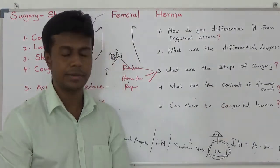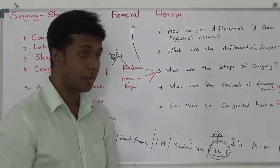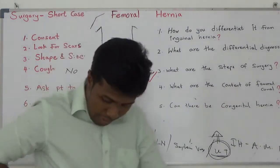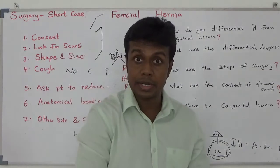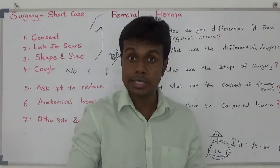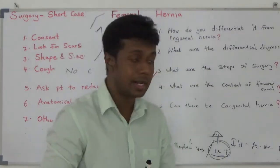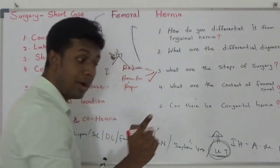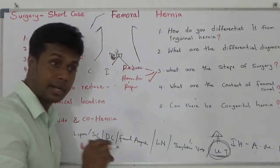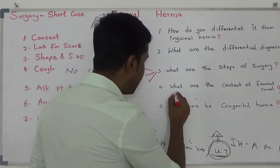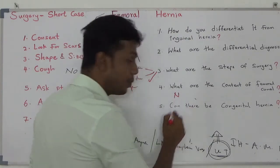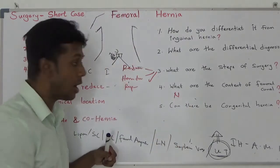What are the contents of the femoral canal? From lateral to medial: the lateral structure is the nerve, then the artery, then the femoral nerve.